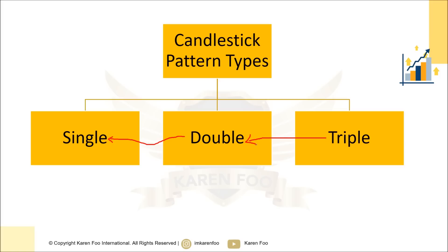Triple patterns tend to be stronger than single patterns because they have more confirmation. Single patterns can sometimes produce false signals when seen in the wrong context. The more candlestick patterns there are, the more complex but also the more accurate — though it still depends on the context. For now, just understand these are the three types you'll learn in detail in the next lessons.